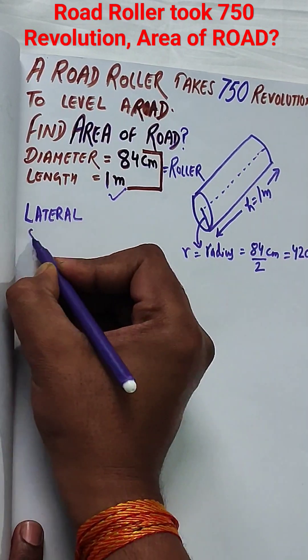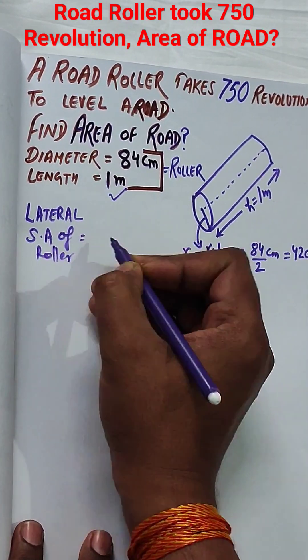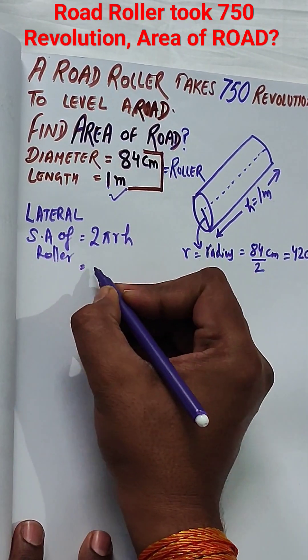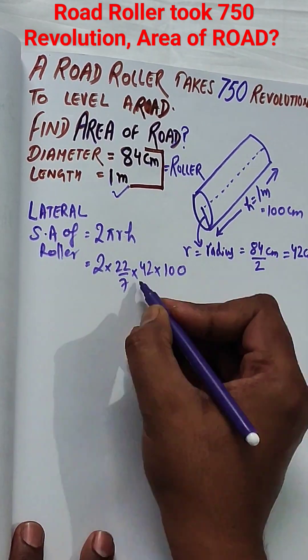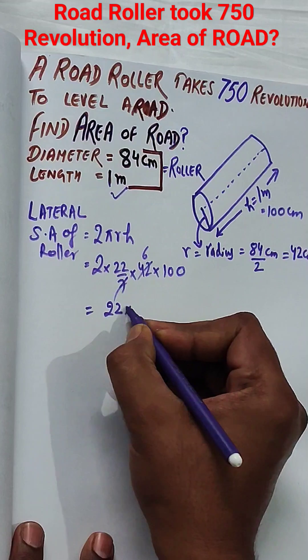Height, that is length, will be equal to 1 meter, which is equal to 100 centimeters. Since we convert all the units to centimeters, it will be easier for all the calculations.